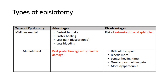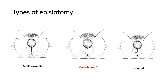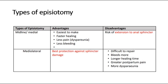The other type, which is the more preferable type, is the medial lateral incision. It offers the best protection against sphincter damage because the incision is made to the side, making it less likely to damage the anal sphincter compared to the midline incision. However, disadvantages include greater difficulty to repair, more bleeding, longer healing time, greater postpartum pain, and more dyspareunia.